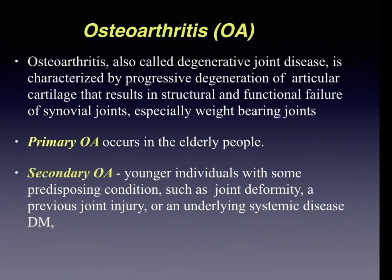Based on the clinical presentation, osteoarthritis can be classified into primary and secondary types. Primary osteoarthritis occurs without an apparent initiating cause as an aging phenomenon, especially in elderly people. Secondary osteoarthritis occurs in younger individuals with predisposing conditions like joint deformities, a previous history of joint injury, or underlying systemic diseases such as diabetes mellitus.